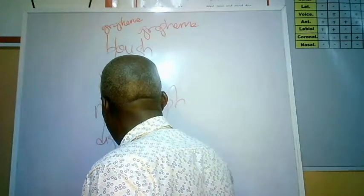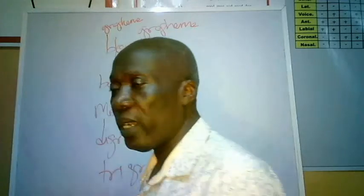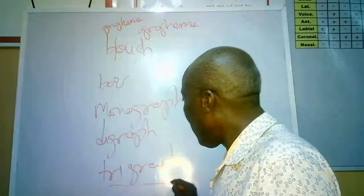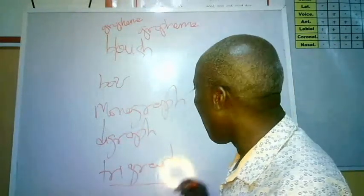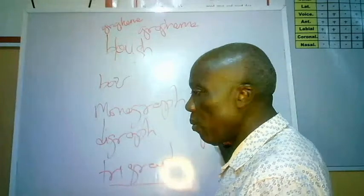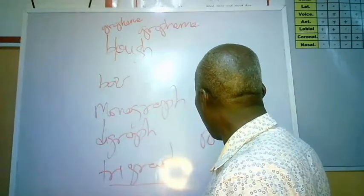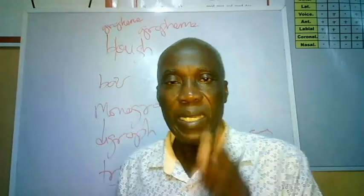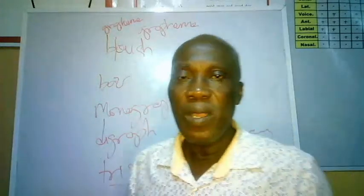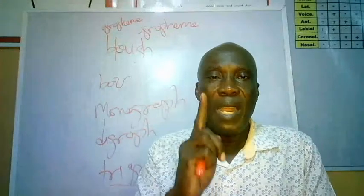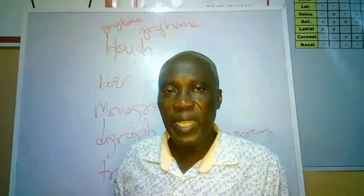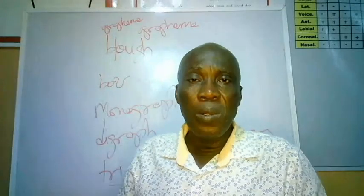Trigraph — 'tri' indicating three. Sometimes you find up to three letters, so that is a trigraph. Above trigraph is better described as polygraph. If there are more than three letters, then we call it a polygraph. Whether polygraph, monograph, digraph, or trigraph, we can call them all grapheme. Any of them can be referred to as a grapheme, so long as it represents only one sound.